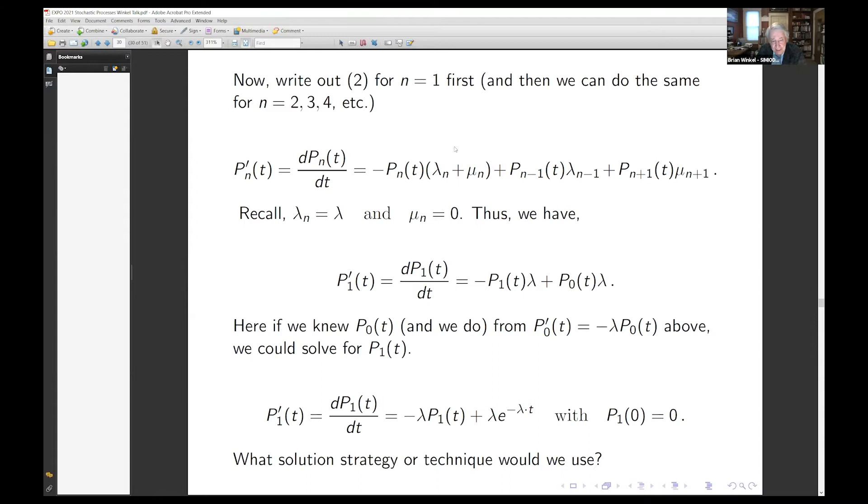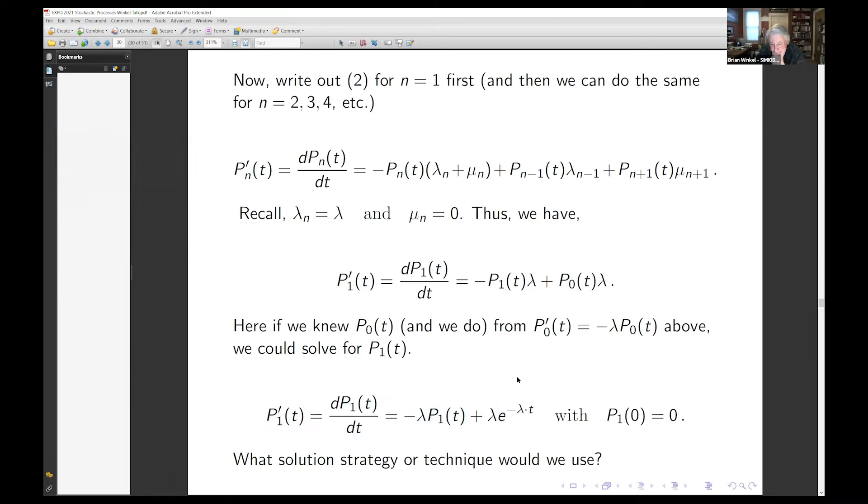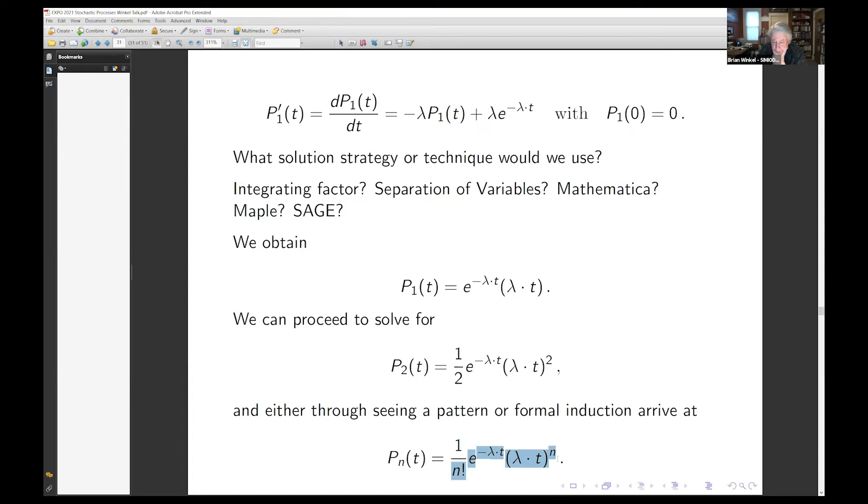You can then look at N equals one and you get this differential equation where you actually know what this one is. So if you put in the probability at state zero you get a differential equation like this. What techniques can you use to solve this differential equation in P_1? My preference is Mathematica. But if you're doing this by hand you use integrating factors or separation of variables. And what you get is P_1 is e^(-lambda*t) plus lambda*t. And P_2 is one half e^(-lambda*t) etc. You can rattle on through these and you can see either a pattern or you can do a formal induction.